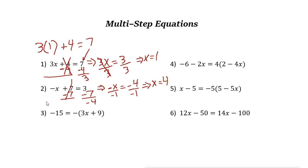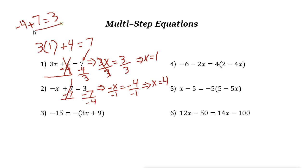But let's check the answer. It's negative x, so we write negative — but we know x is 4. So negative 4 plus 7: is it 3? Yes it is. So the answer 4 for x is correct.